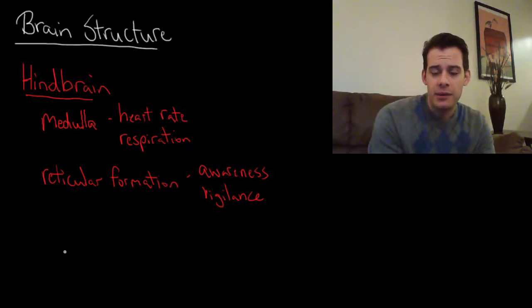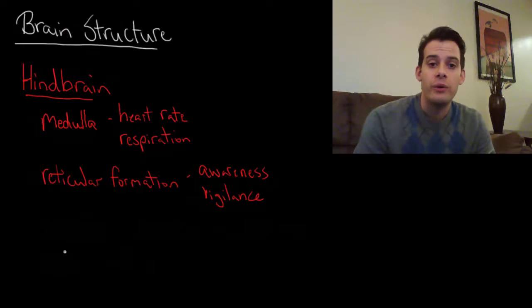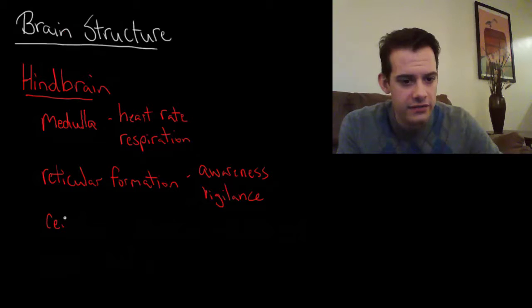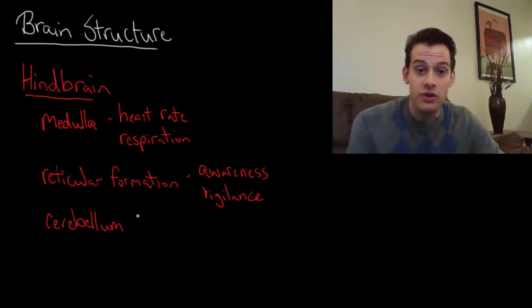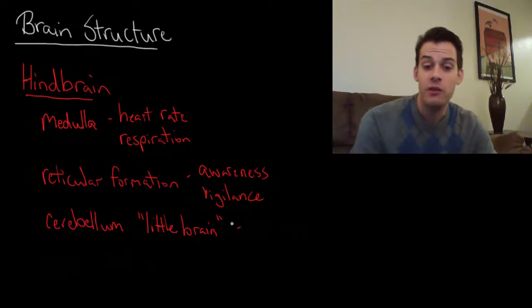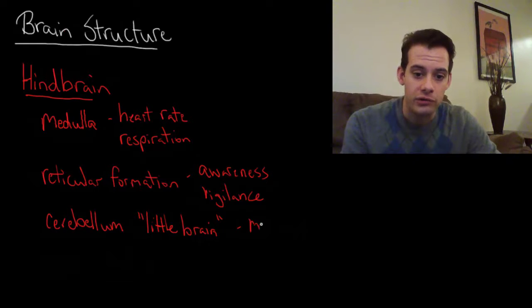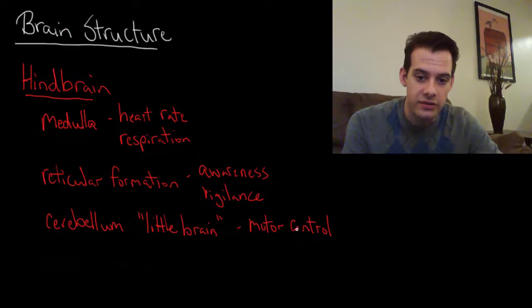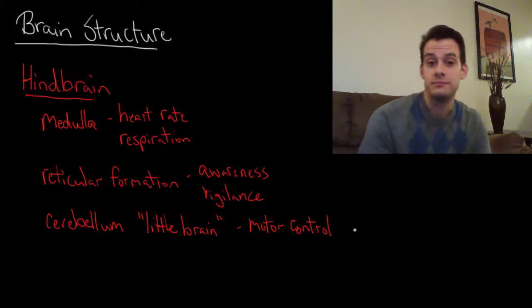If we move up from there and a little bit behind the brain stem we see an area that looks just like a little brain. And this is the cerebellum. And the reason it's called the cerebellum is that this is Latin for little brain. And the cerebellum is involved in motor control. So fine motor movements coordinating your movements. Part of that is happening in the cerebellum.